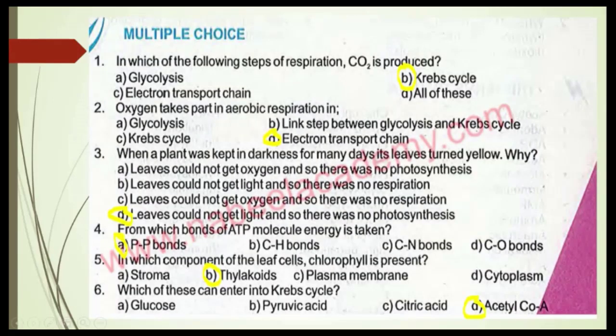Now open exercise page number 137. We shall solve the MCQs. Question 1: In which of the following steps of respiration is carbon dioxide gas produced? The answer is the Krebs cycle — option B is correct. Question 2: Oxygen takes part in aerobic respiration in the electron transport chain. Question 3: When a plant was kept in darkness for many days, its leaves turned yellow because leaves could not get light and so there was no photosynthesis — option D. Question 4: From which bonds of the ATP molecule is energy released? The answer is from the P-P bonds — option A.